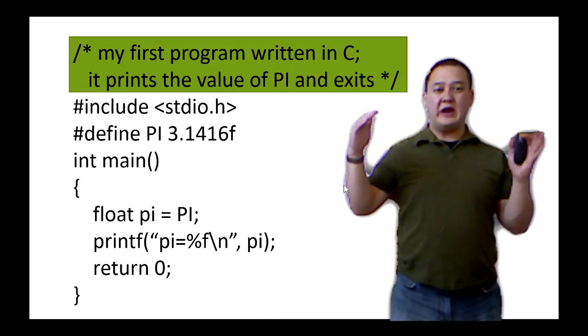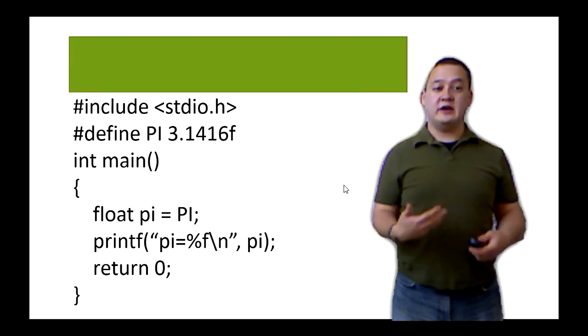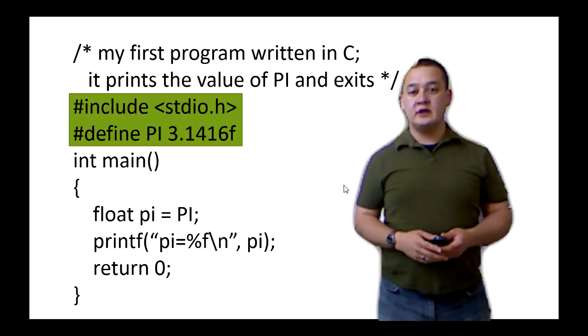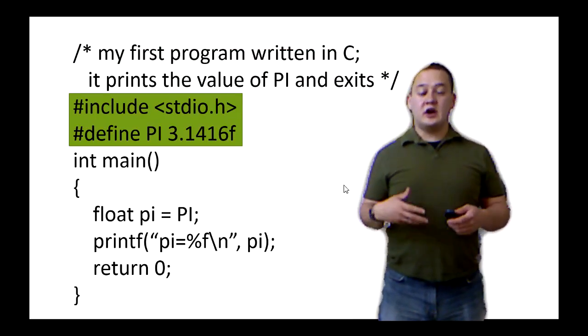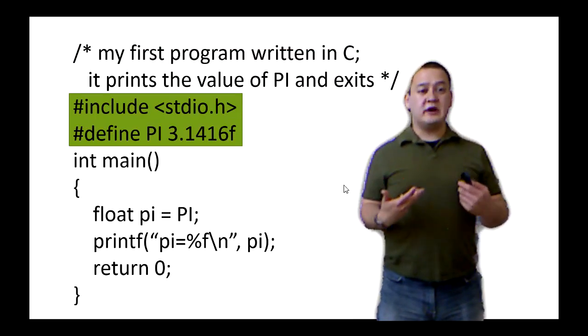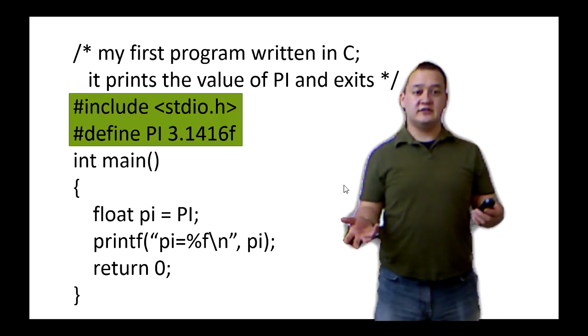And anything bracketed by those two symbols is going to be treated as a comment and it's going to be stripped away by the preprocessor. The next set of commands here that start with this pound symbol are called preprocessor directives. And these tell the preprocessor to do certain actions with the code.